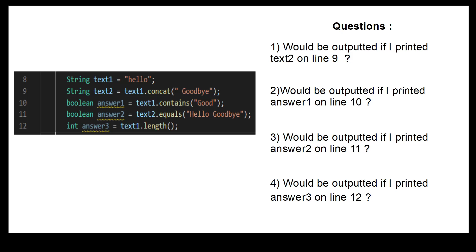In the exam you'll sometimes be given a bit of code and asked what the output is, so hopefully you can pause the video and answer these questions. For the first one, on line 9, if we print text2 what will the output be? We're combining "hello" and "goodbye", so the output would be "hello goodbye". For question two, what would be output if we print answer1 on line 10? Here text1 contains "hello" and we're checking if it contains "good" — there is no "good" within "hello", so answer1 would be false.